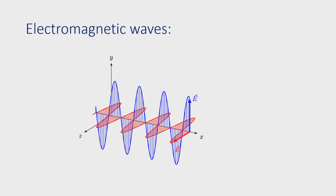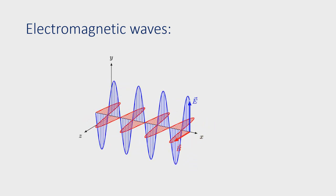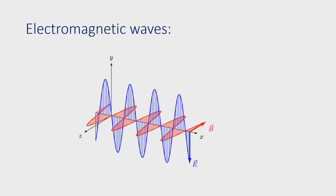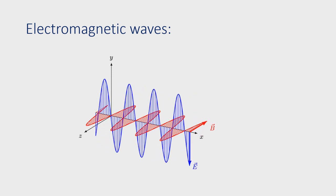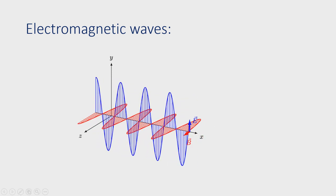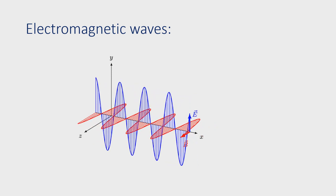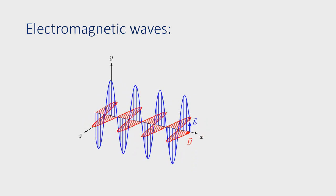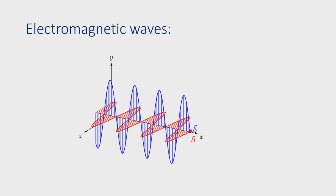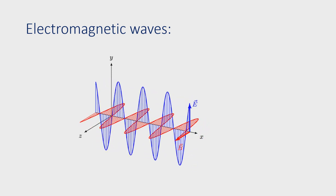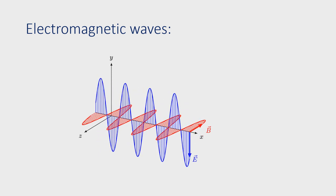The communication takes place in wireless communication with the help of electromagnetic waves. Electromagnetic waves travel with the speed of light in space. They consist of two vectors — electric vector and magnetic vector — perpendicular to each other, and they travel perpendicular to these two directions.